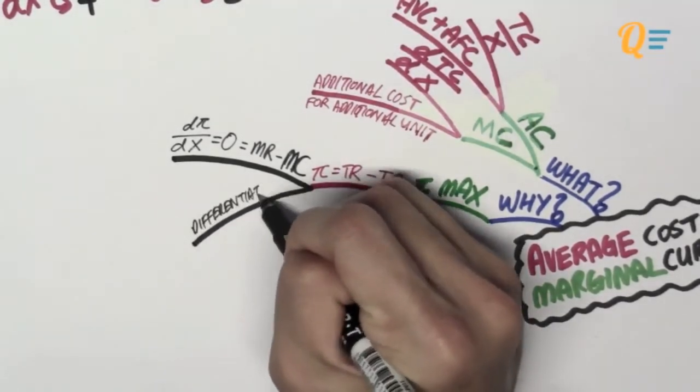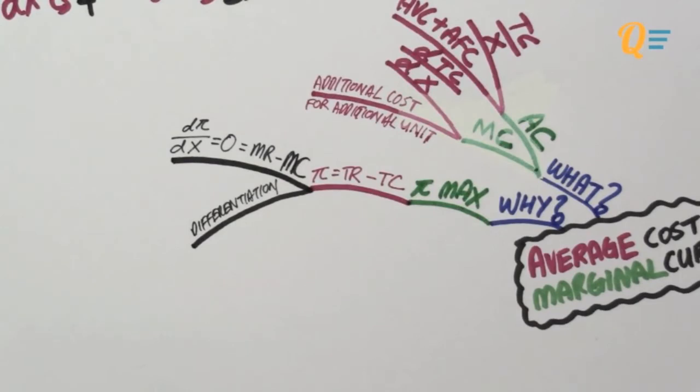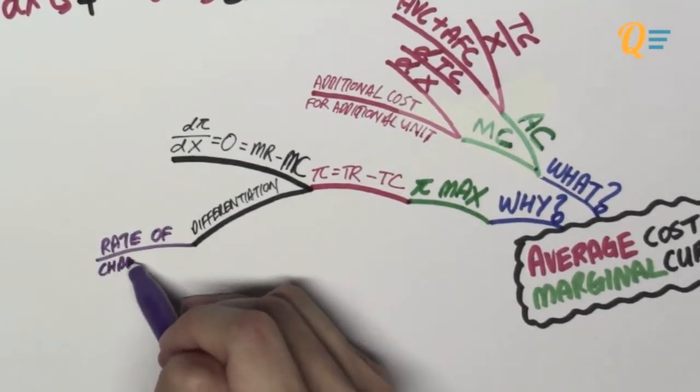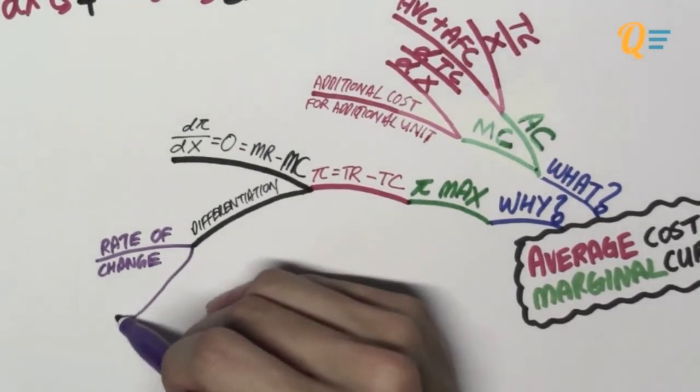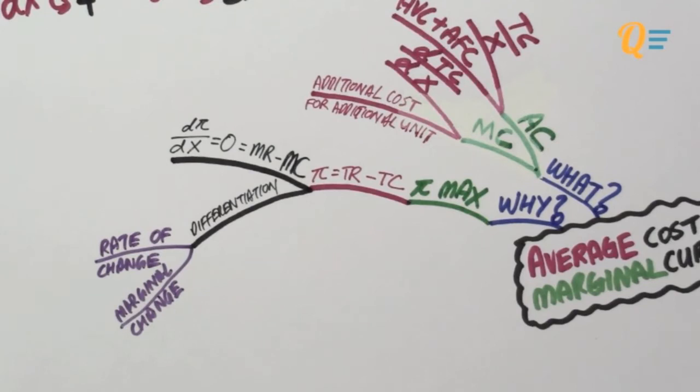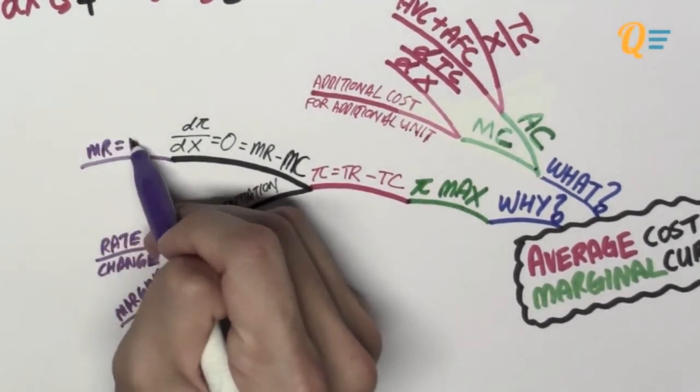Well, that's because in differentiation, what you're doing is you're actually trying to find out the rate of change, right? So when you differentiate something, you're finding out how much it changes. So this is also known as the marginal change. That is why when you differentiate something that's a total, you get the marginal, all right?